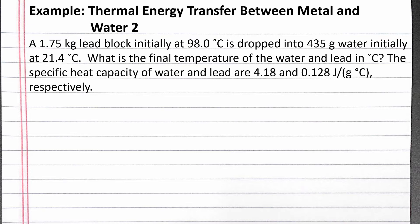A 1.75 kilogram lead block, initially at 98.0 degrees Celsius, is dropped into 435 grams water, initially at 21.4 degrees Celsius. What is the final temperature of the water and lead in degrees Celsius?